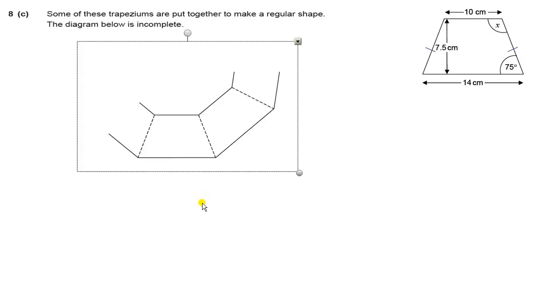Okay, here's question 8c as continuation of 8a and b. Using the trapezium from the earlier part of the question, we are asked to put them together to make a regular shape, and then we need to know how many of those are required to make that shape.